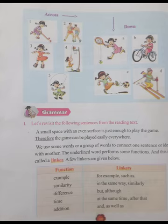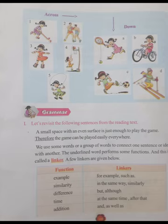A few linkers are given below. Function and linkers: For example - 'for example', 'such as'; Similarity - 'in the same way', 'similarly'; Difference - 'but', 'although'; Time - 'at the same time', 'after that'; Addition - 'and', 'as well as'. Read the following sentences and fill in the blanks with appropriate linkers from the box: as well as, in the same way, such as, at the same time, although.